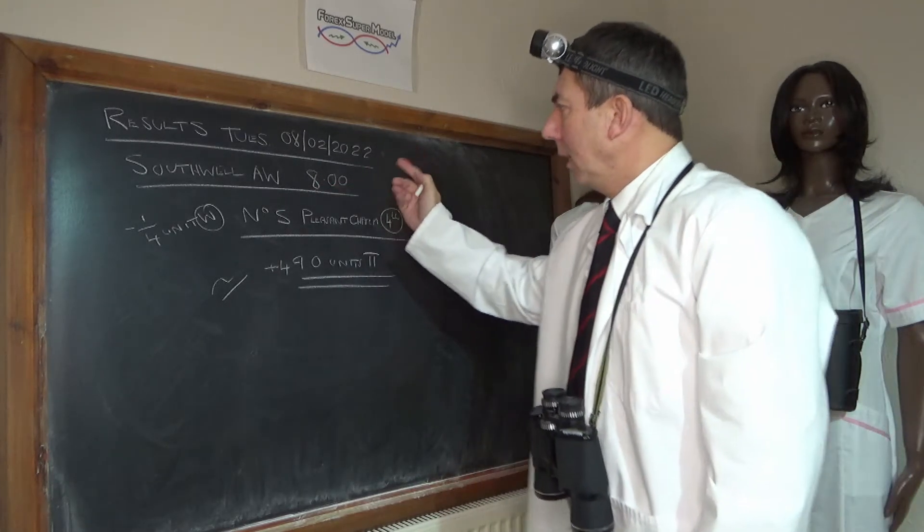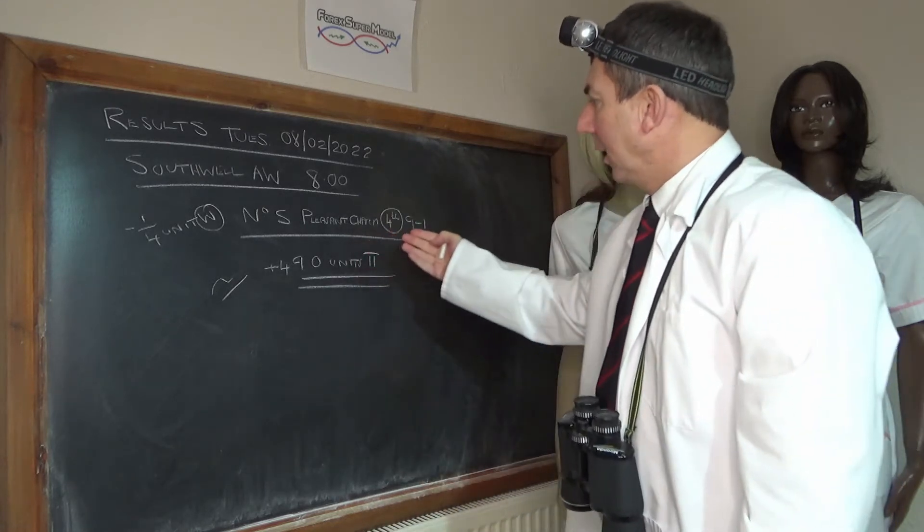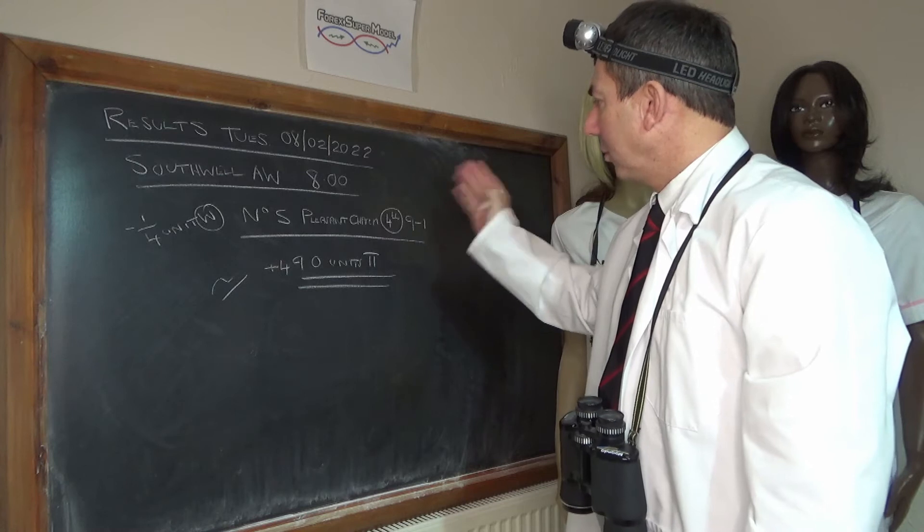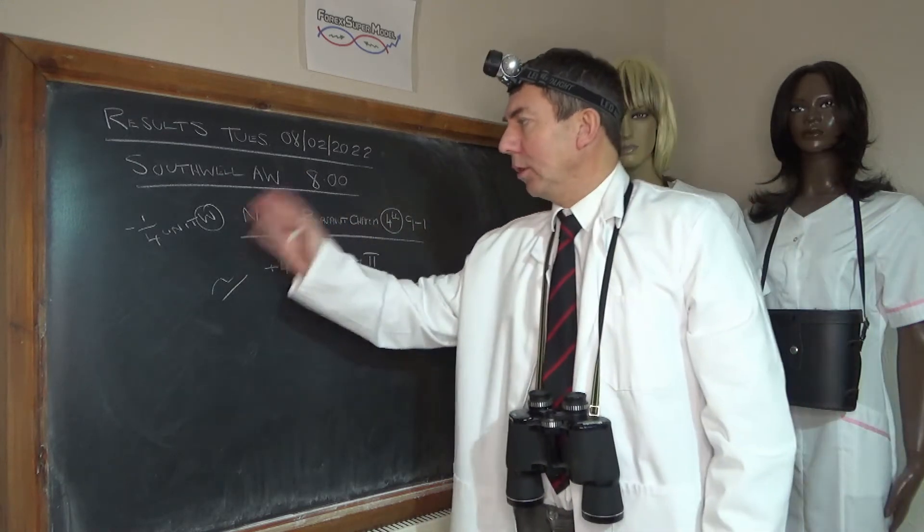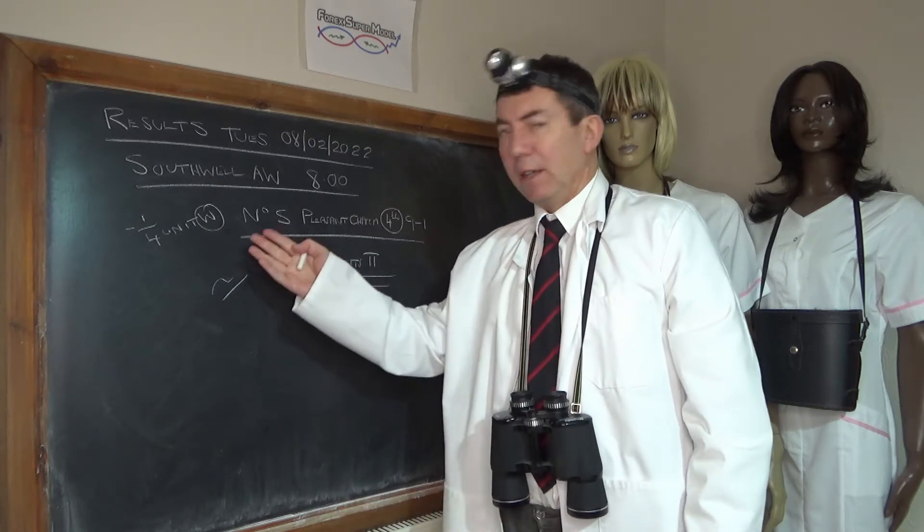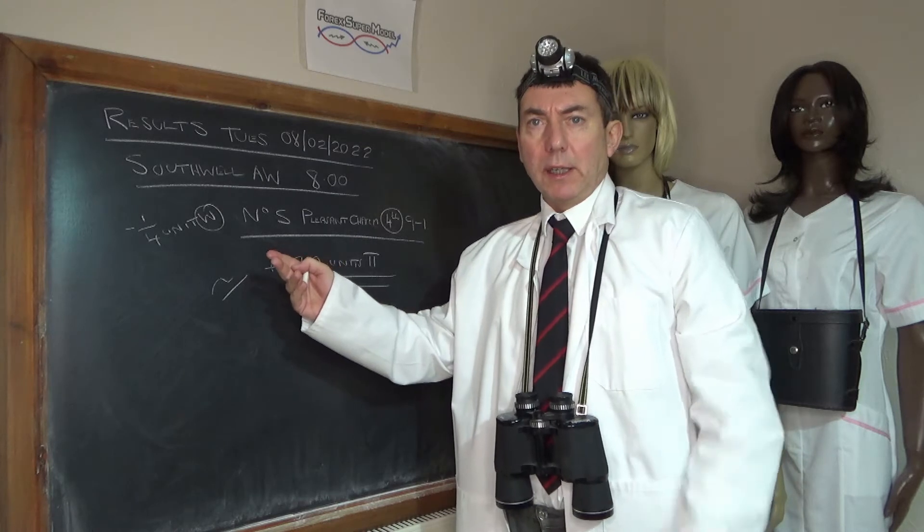Southwell weather, 8 o'clock last race of the card. We were on number five Pleasant Charm, came fourth which is basically last - only four in the race at 9 to 1, quarter unit win. We had about 11 to 1 on that, the race was run very slowly, it had